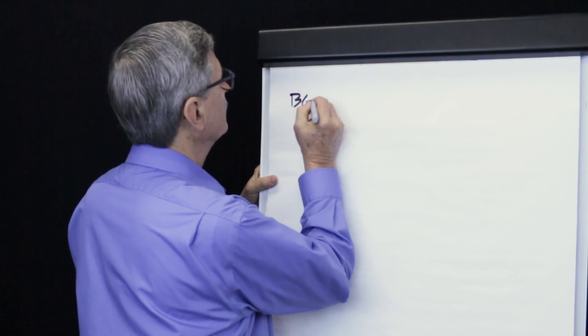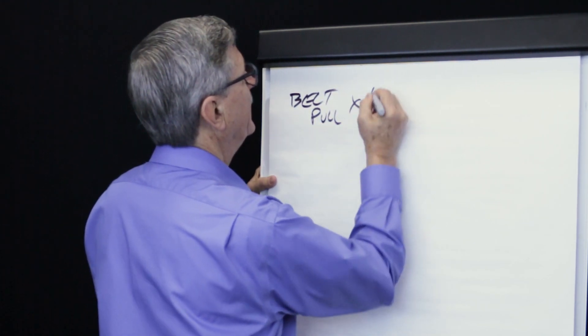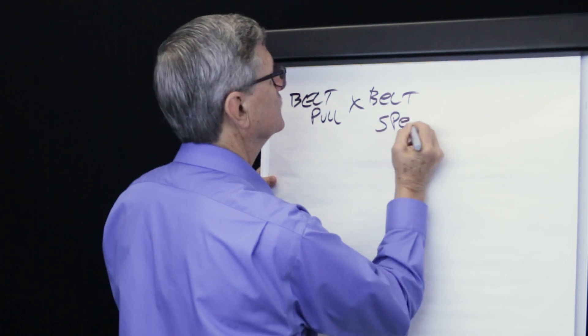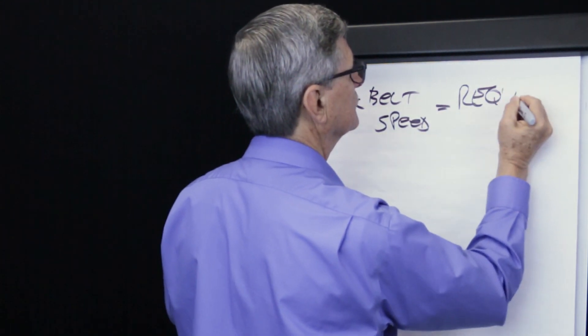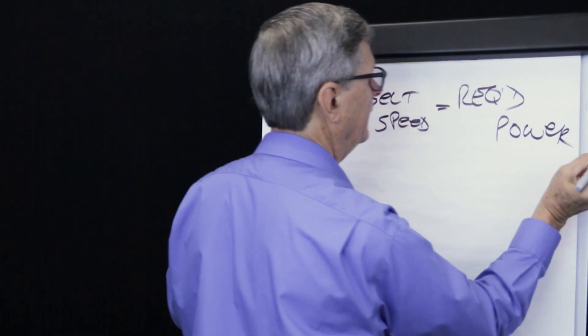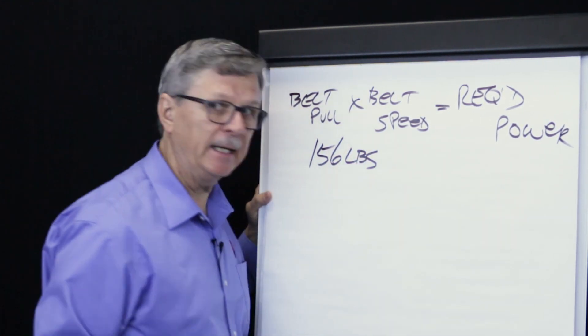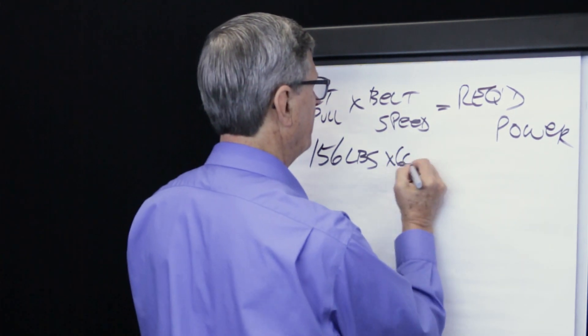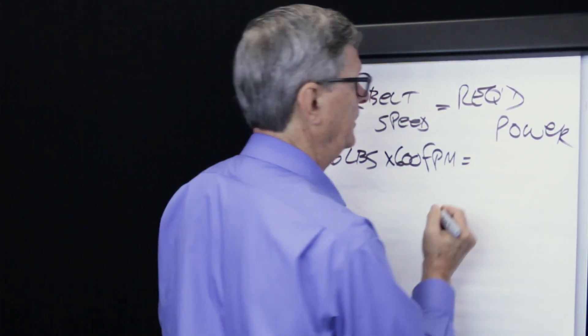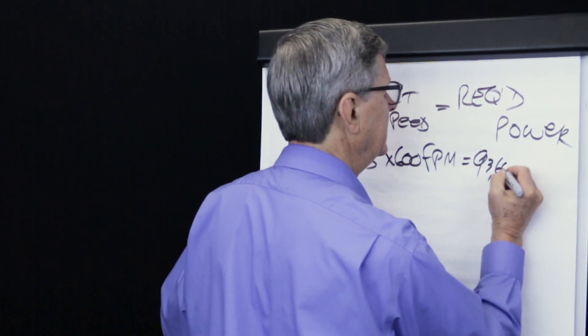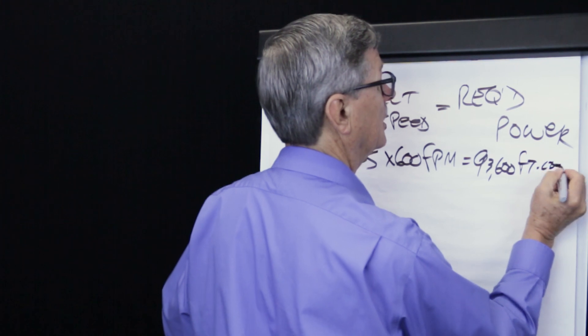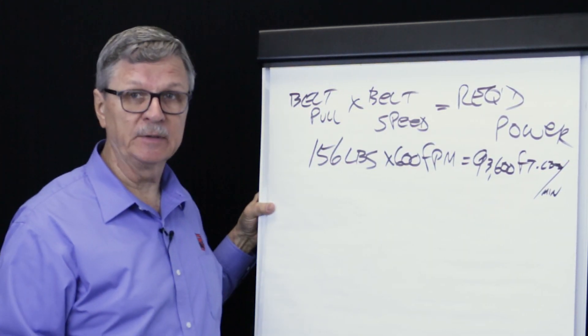Since we now know the total drag of the skirt board system, we can calculate the drive power required to overcome that friction. We know that belt pull times belt speed equals the required power. And we know that our belt pull is 156 pounds. Let's say in our example we have a belt speed of 600 feet per minute. We multiply those two numbers and we get a product of 93,600 foot-pounds per minute.